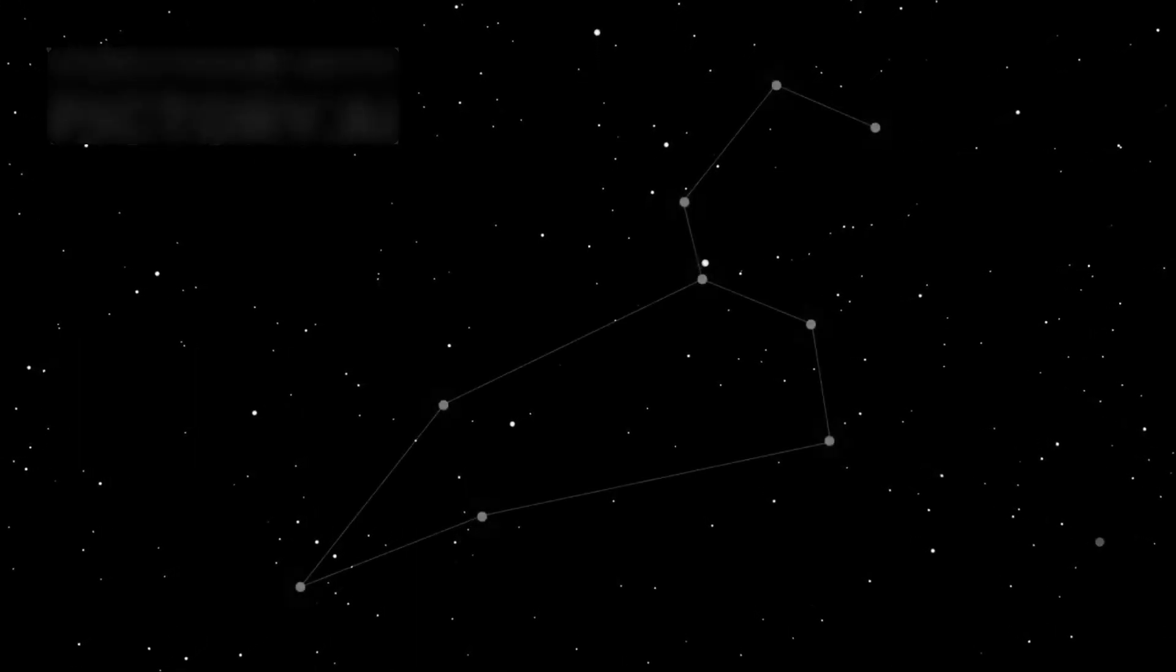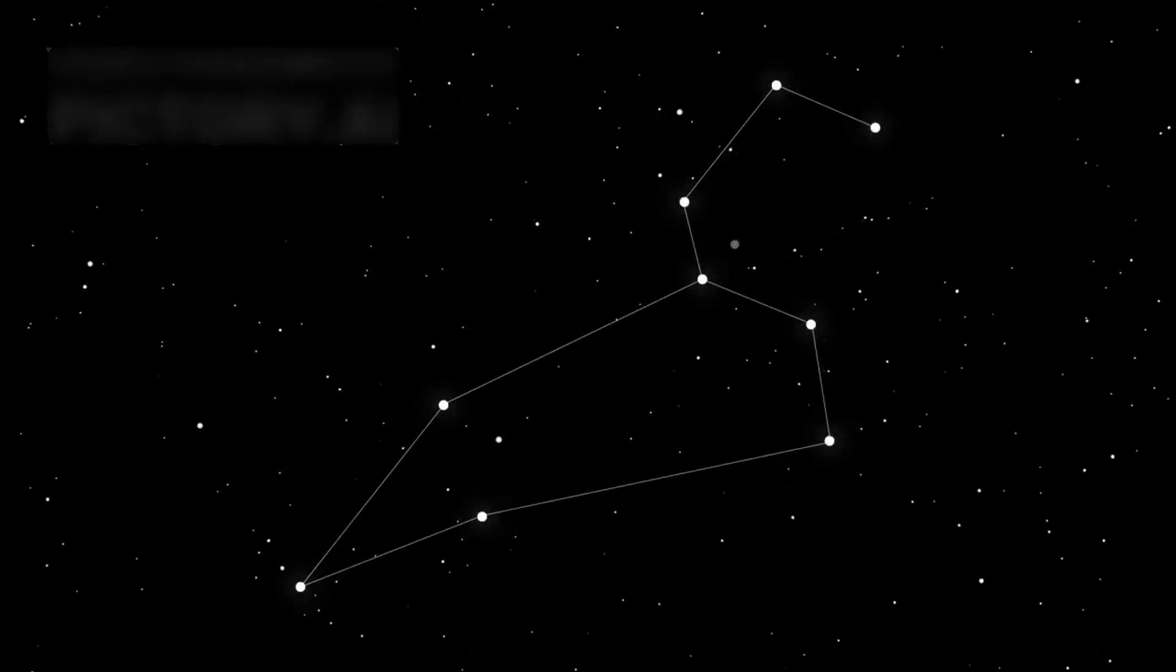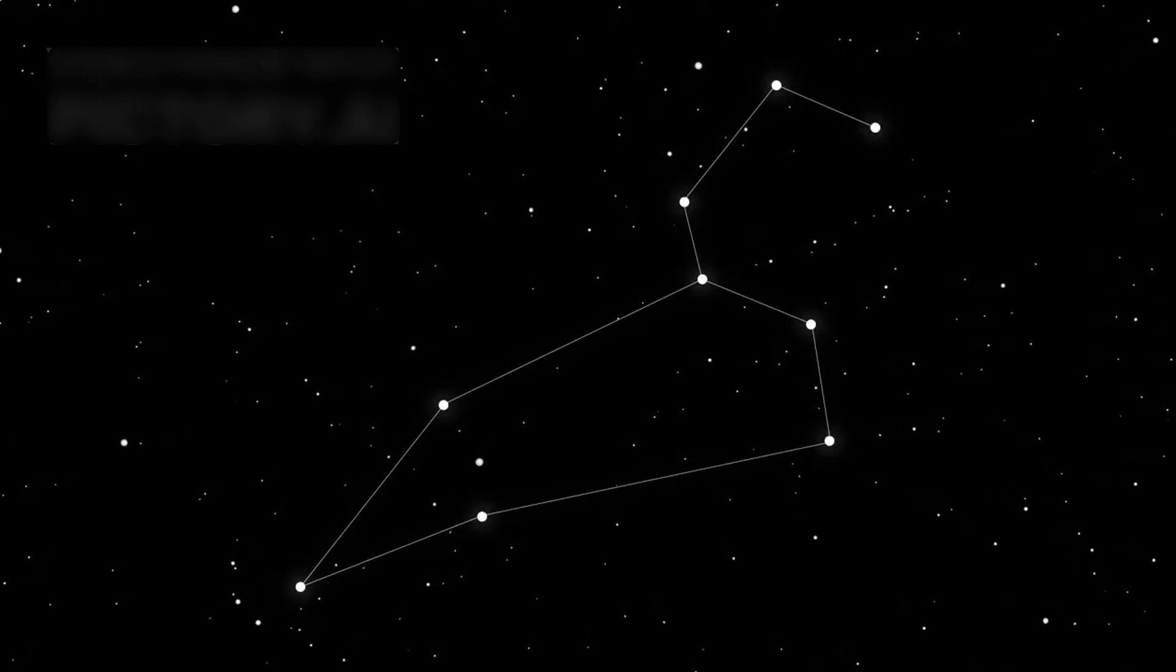It would be a visual spectacle, reshaping how we view constellations. But the absence of Polaris would mark more than just a missing dot. It would symbolize the end of a navigational era, forever altering how we orient ourselves beneath the stars.